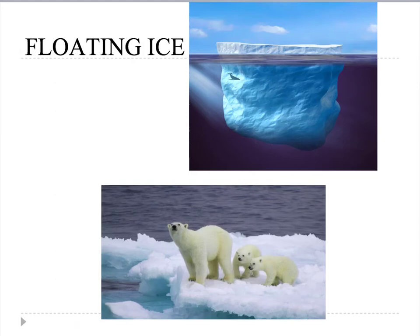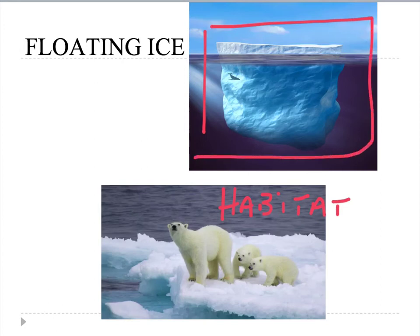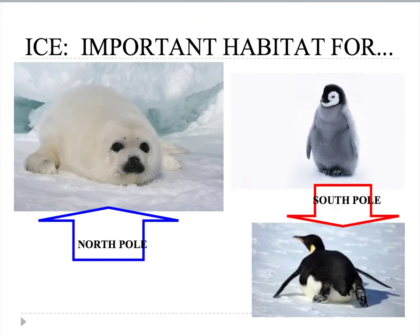Floating ice also serves as a habitat for animals — polar bears live on it in the North Pole, and seals breed and protect their young on it. If all ice were to sink to the bottom, it would raise sea levels and affect shorelines — we might not have Miami on the map. In the South Pole, penguins slide on ice as well.